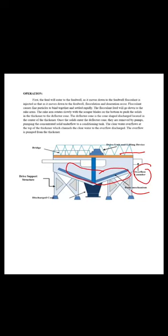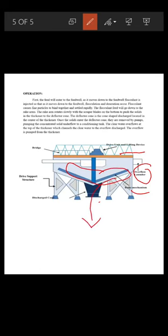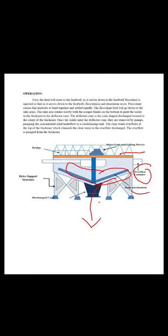The flocculated feed moves down to the rake arms. The rake arm rotates slowly with scraper blades on the bottom to push the solids in the thickener toward the deflector cone. The blades push the concentrated solids to the discharge cone.